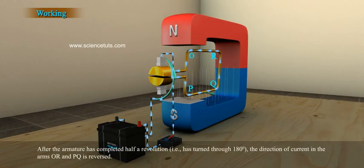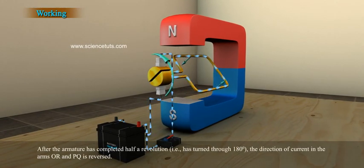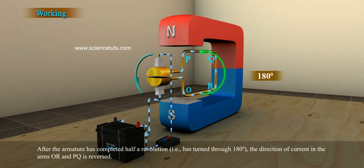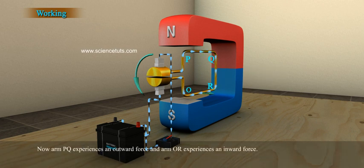After the armature has completed half a revolution, i.e. has turned through 180 degrees, the direction of current in the arms OR and PQ is reversed. Now, arm PQ experiences an outward force and arm OR experiences an inward force.